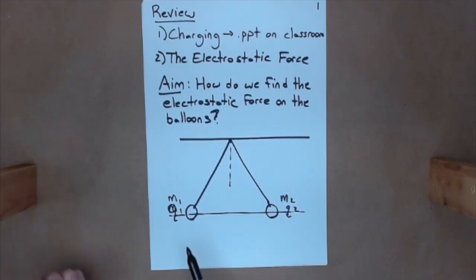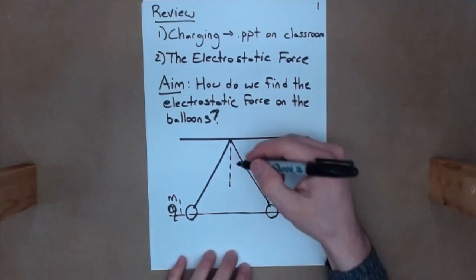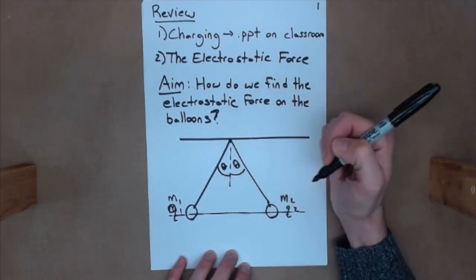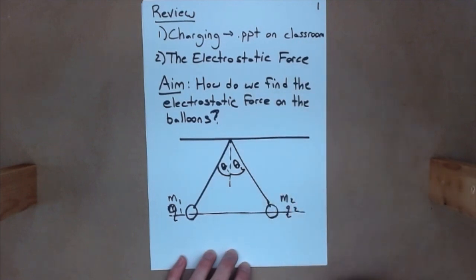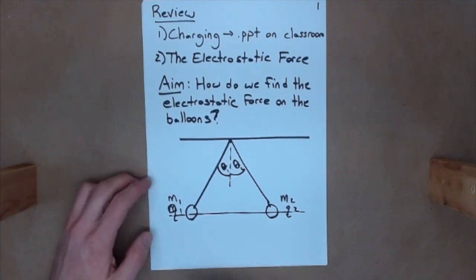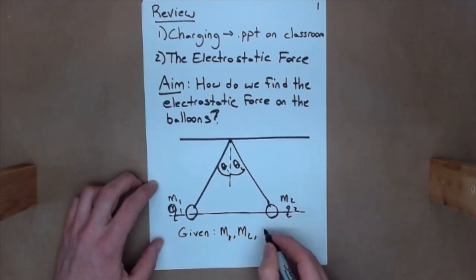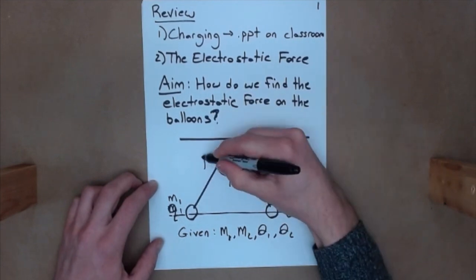And here's a rough drawing of the setup that we had. We have balloon 1, which I'm calling M1 and Q1, and then here's 2, M2, and Q2. What we saw is, as these things had a charge, the ropes made an angle of theta with the vertical. And what I told you was that theta 1 equals theta 2. So the angles were equal to each other with respect to this vertical line. Now, what we're going to do is we're going to try to find that electrostatic force, given that we know M1, M2, theta 1, and theta 2.